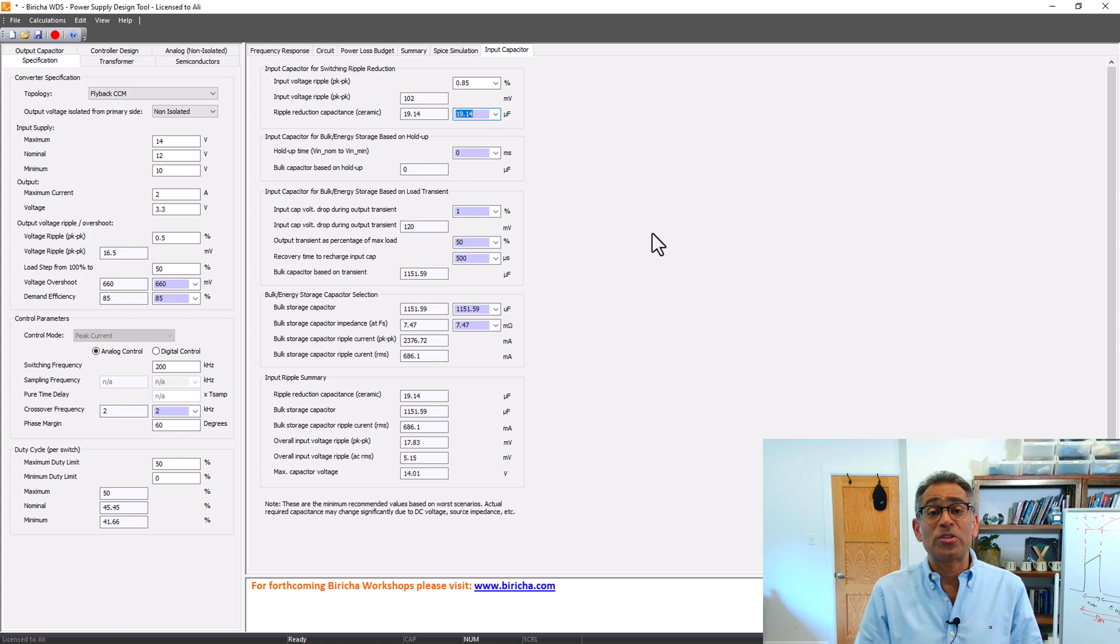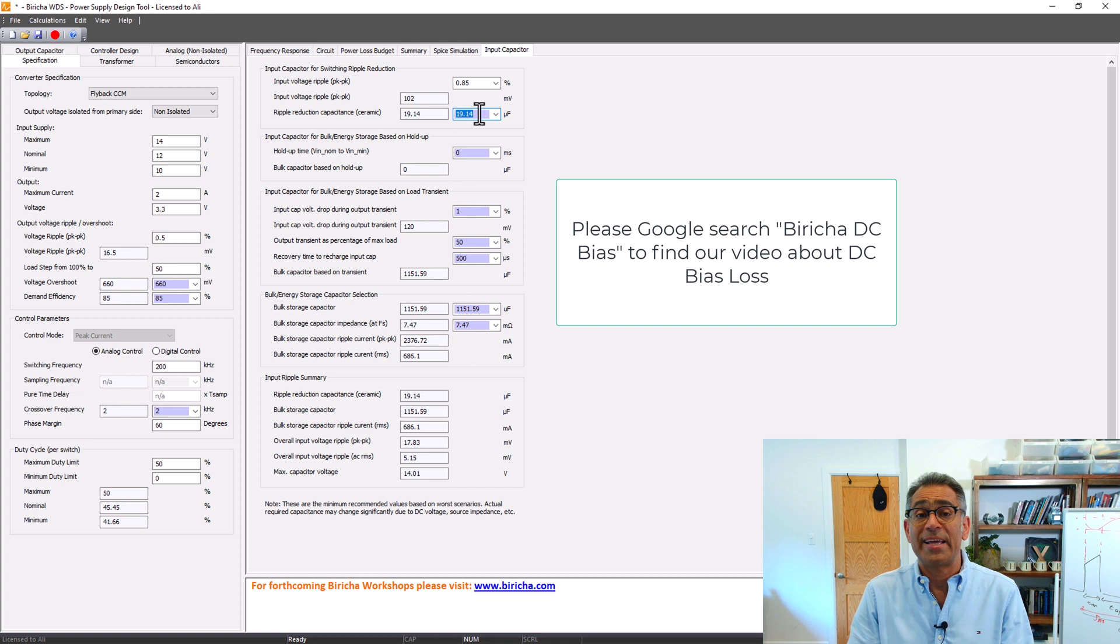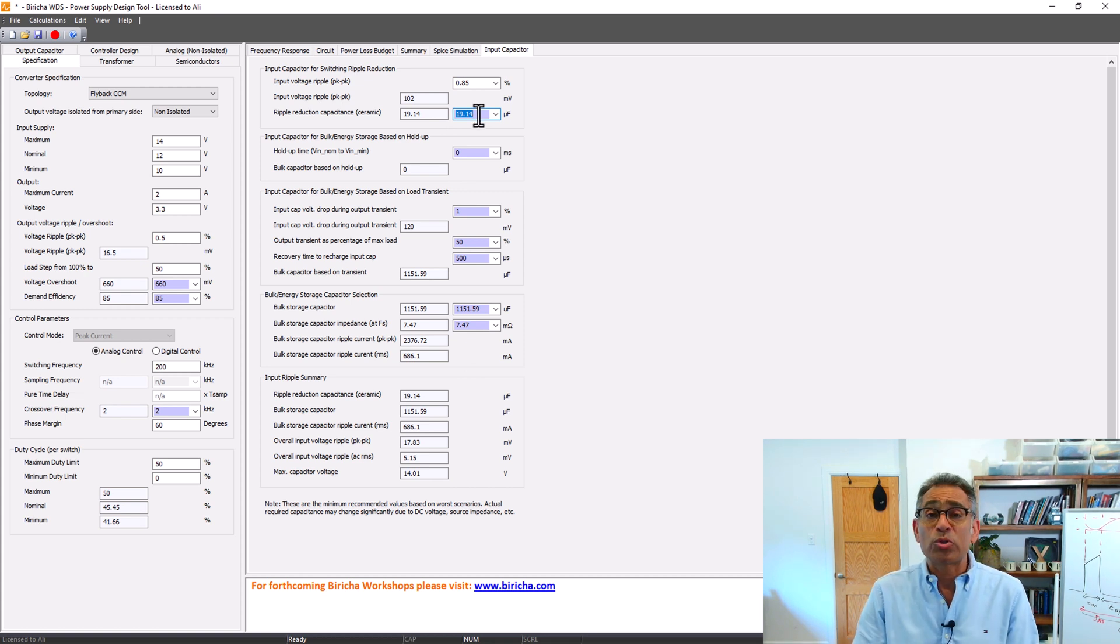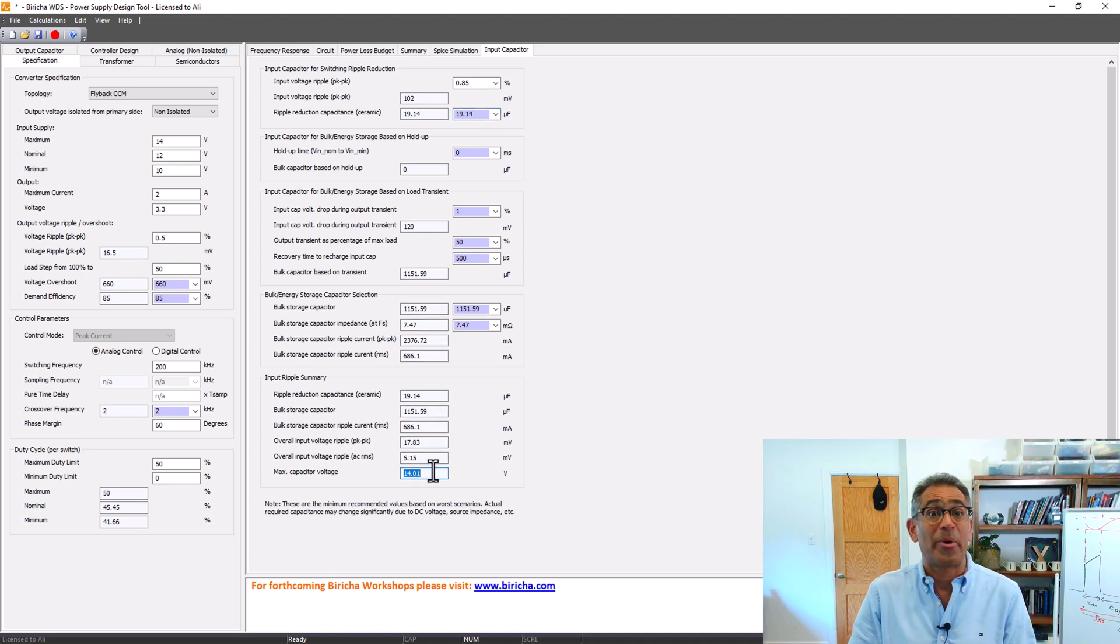However, please note that the voltage stress, the DC voltage across this capacitor is 14 volts, and therefore we're going to take into account the DC bias loss. I would be inclined to buy, first of all, three times more than this, so three times 20 microfarad capacitors, and also in order to minimize the impact of the DC bias loss, we buy a bigger package, 1210, and also a much higher voltage rating on the capacitor, perhaps 50 volts.